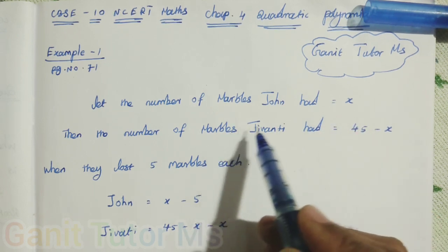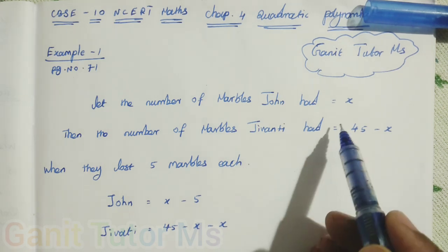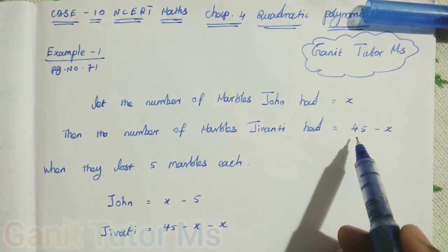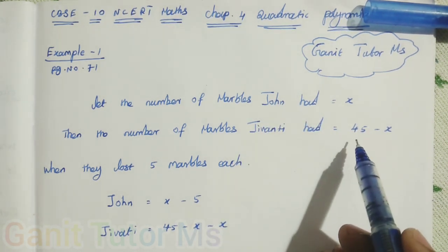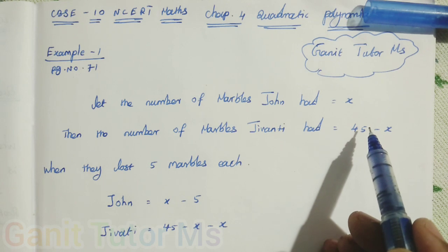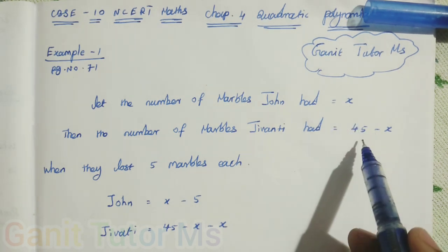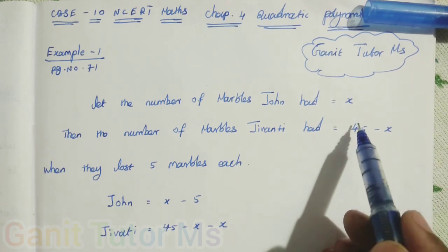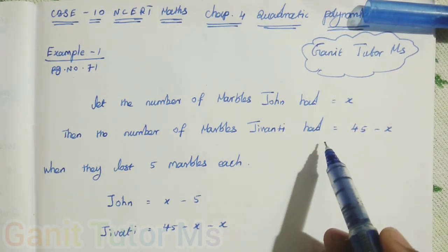Then the number of marbles Jivanti had, we know that totally 45. So 45 minus how much John had, that is what Jivanti had. For example, it is totally 45. If she is having 20 remaining, 25 is Jivanti. The same thing, the total 45 minus x, that is what Jivanti had.